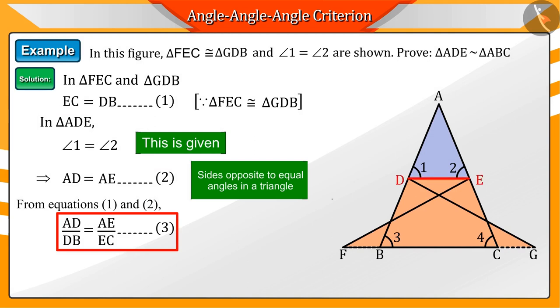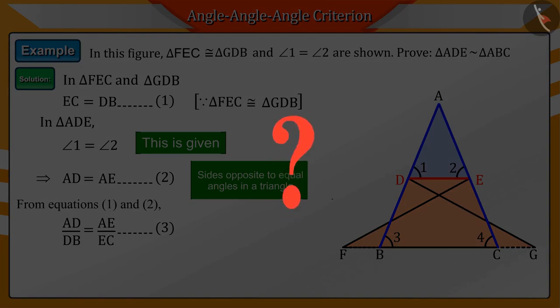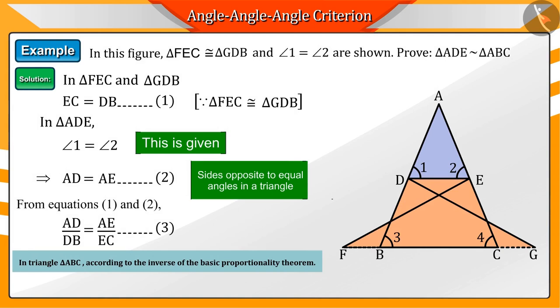Equation 3 tells us that the line DE divides the sides AB and AC of triangle ABC into equal ratios. What do you understand from this? According to the inverse of the basic proportionality theorem, we can say that the lines DE and BC are parallel lines.